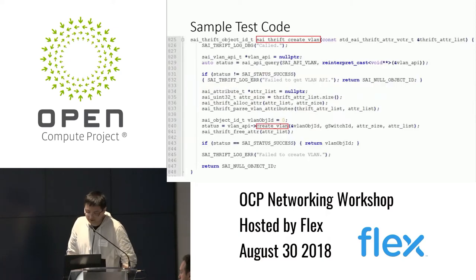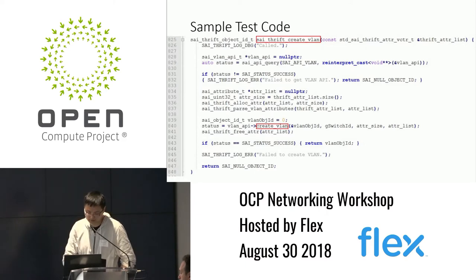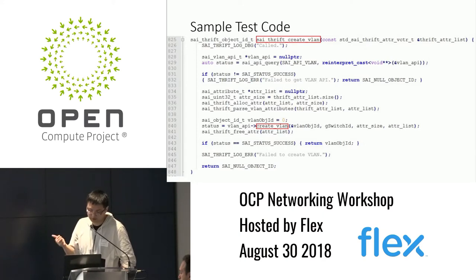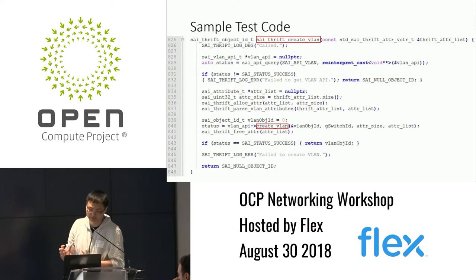This code runs on the server. What it does is receive the attribute list from the client, parse it, and then call the VLAN API — specifically create_vlan — to invoke the SAI APIs on the switch and perform the real configuration.